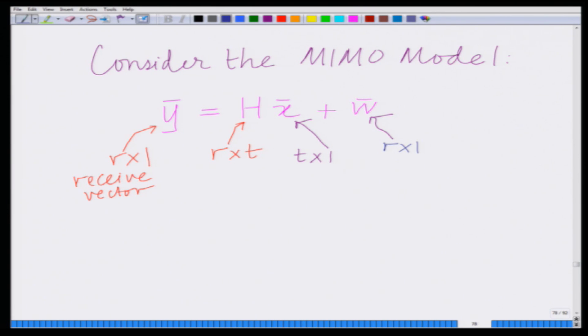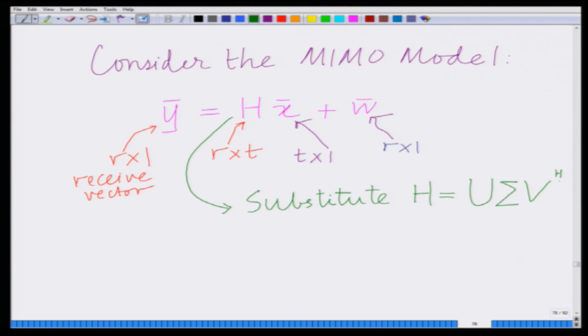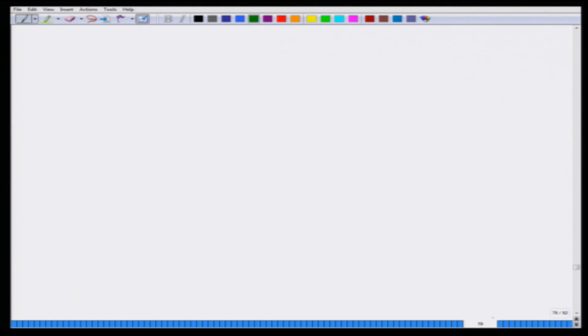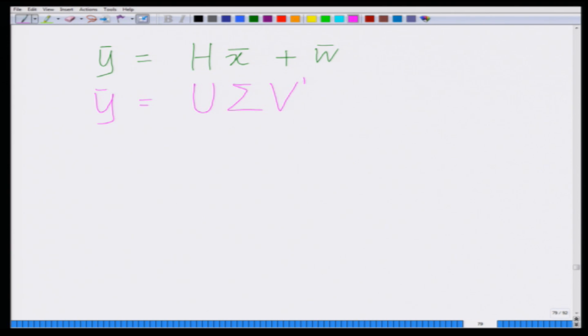Now we employ the SVD. For H in this equation, we substitute the SVD: H = UΣV†. Substituting into the MIMO system model, we get Ȳ = UΣV†X̄ + W̄.